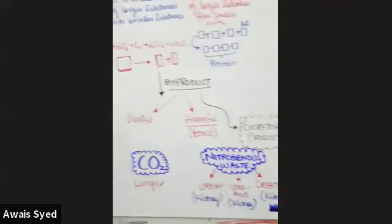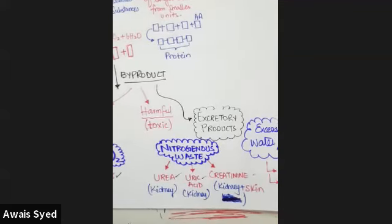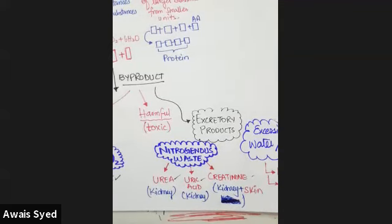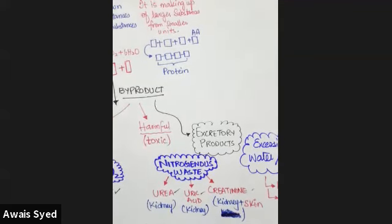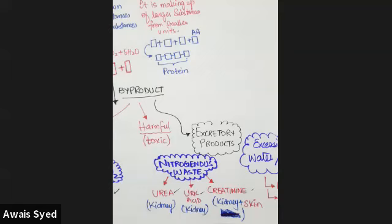After that, you have nitrogenous waste materials. In the nitrogenous waste materials, you have urea, uric acid, and creatinine. Urea is removed from the kidneys, uric acid is also removed from the kidneys, and creatinine is also removed from the kidneys.